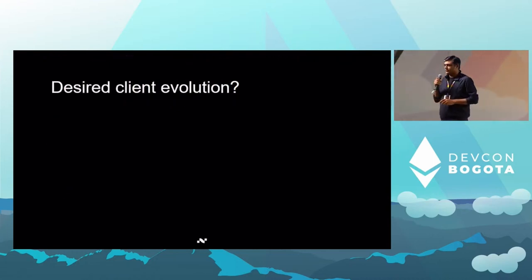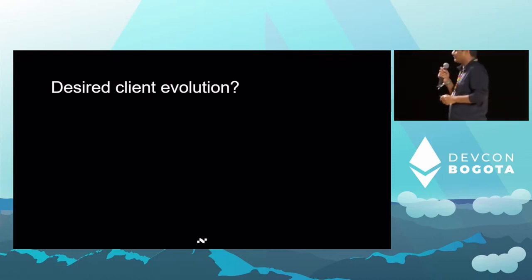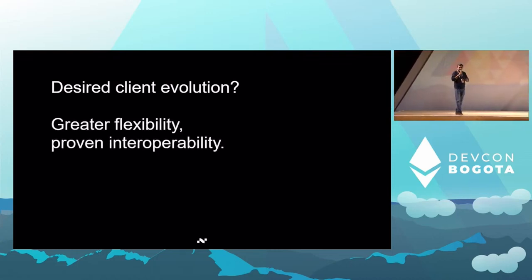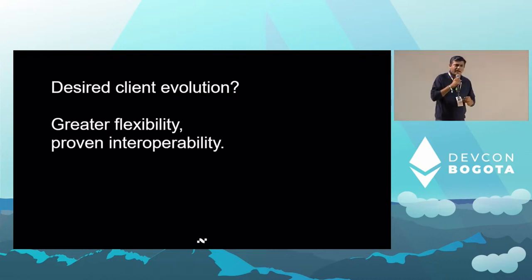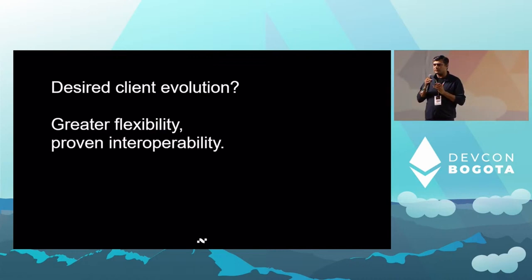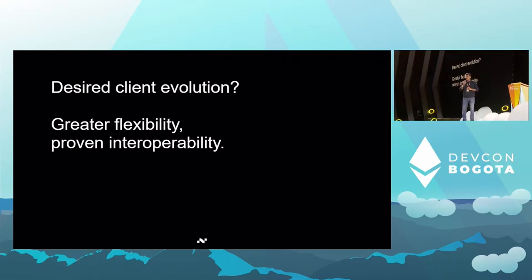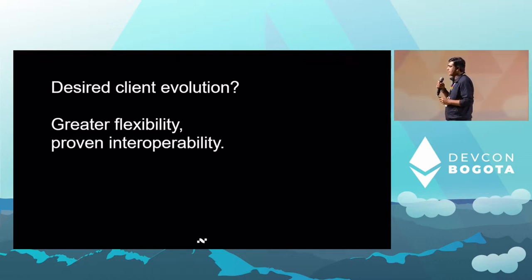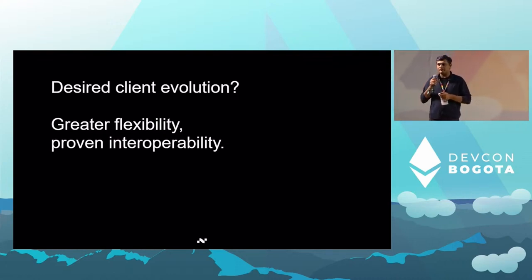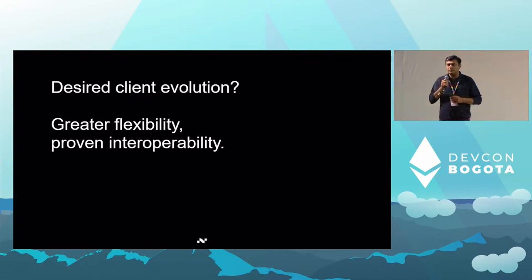What does desired client evolution look like from a node operator point of view? It's basically much more flexibility in how they want to use the client with their current setup, and much more interoperability. There are other pieces of software used in running a sophisticated node operation, so interoperability with all those components becomes really important. All of these factors matter because if we want client diversity in the network, we have to meet these requirements and challenges to see greater diversity in the node operator validator segment.